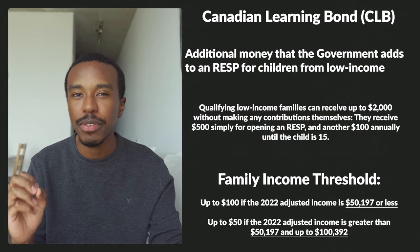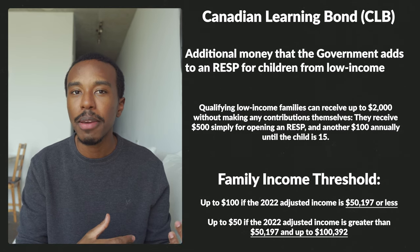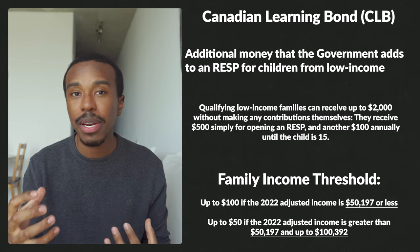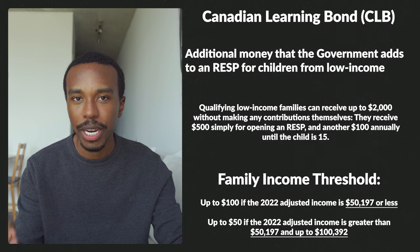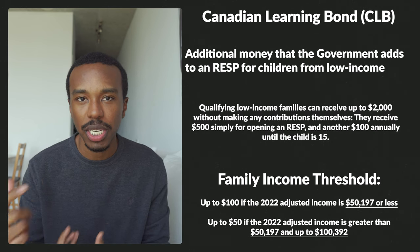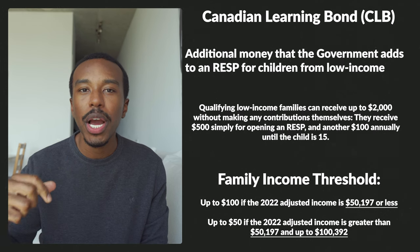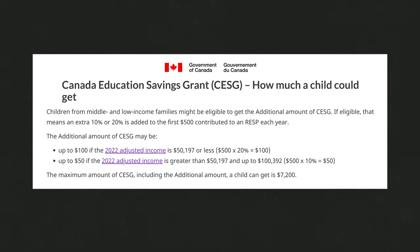Kids from lower-income households — we'll show the actual income threshold as of 2022 on screen — are eligible for additional money through something called the Canadian Learning Bond, which provides an additional $2,000. Also, if your household income is greater than $50,000 up to a max of $100,000, you're eligible for an additional $50 a year, making the annual maximum $550 instead of the normal $500. And if your household income is below $50,197, you get an additional $100 a year, so instead of the normal $500 max they'll give you $600. Keep in mind there's still that $7,200 lifetime maximum.